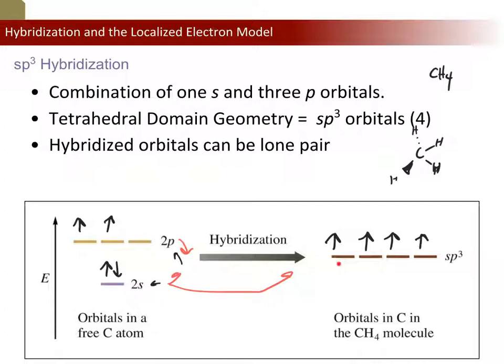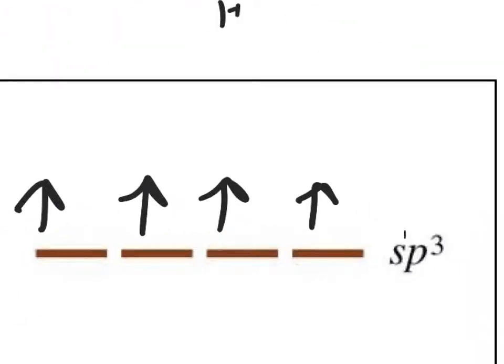We call each one of these the sp3 orbitals, and there are four of them. If you want to remember how many orbitals there are in sp3, think of it as S1P3: one plus three equals four. That's how many orbitals there are when you hybridize sp3 — one S and three P make sp3 orbitals.